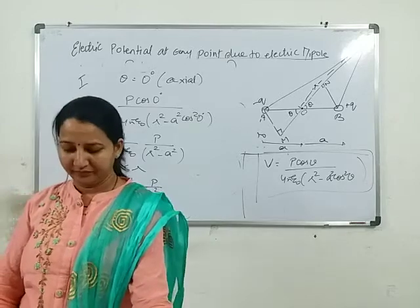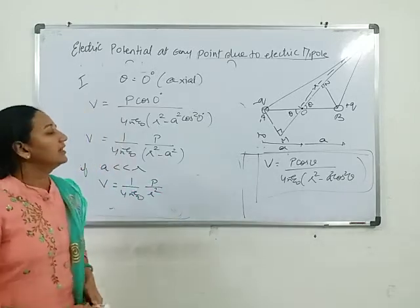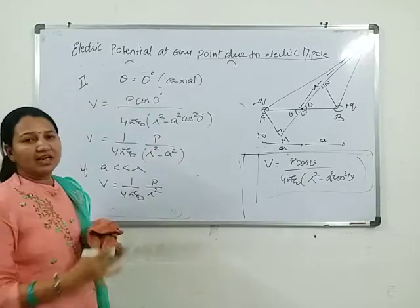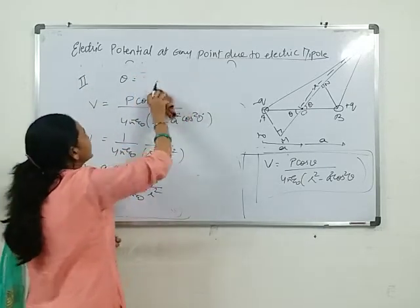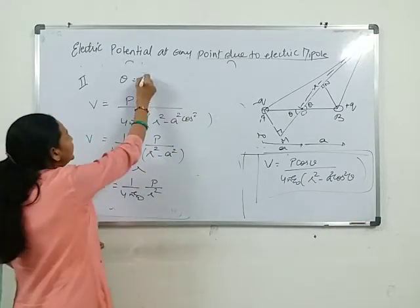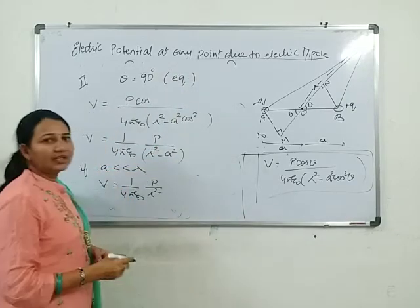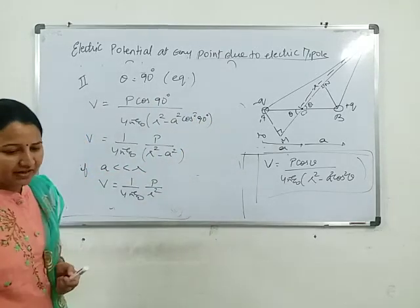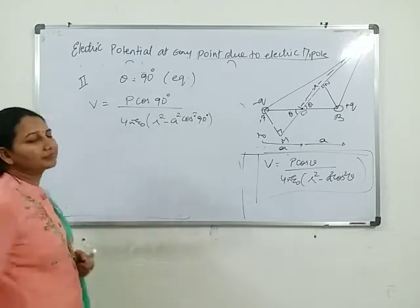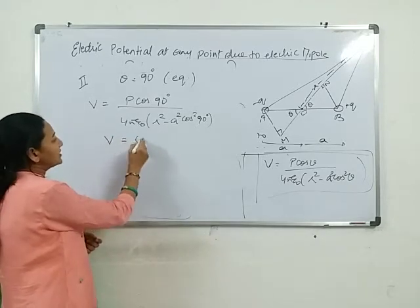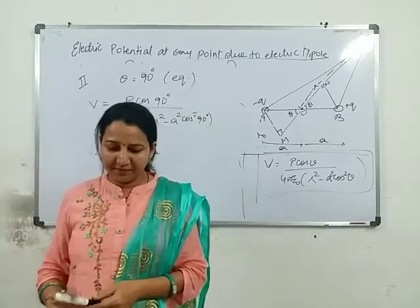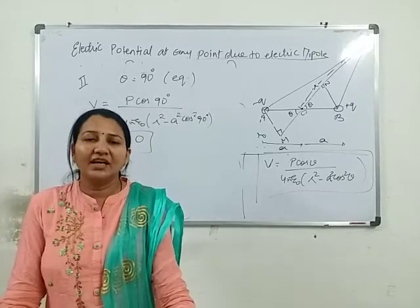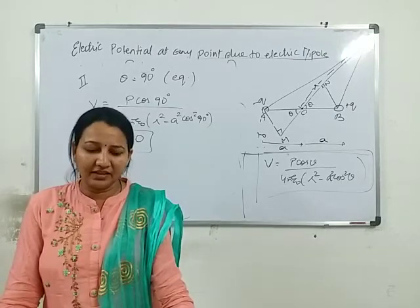Case 2: when point P lies on the equatorial line, such that theta is equal to 90 degrees. Here cos 90 has value 0. So V equals 0. On the equatorial line, V equatorial is equal to zero.